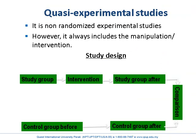Quasi-experimental studies are non-randomized experimental studies. Rather than randomly allocating to two groups, an intervention is given to the study group and outcomes are observed after. A control group is selected but not randomly. Before the study, variables such as blood sugar values are measured, and after the study period the same variables are checked again, then compared between study group and control group.